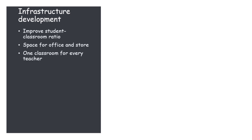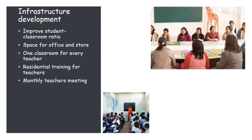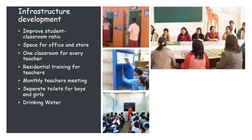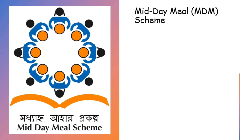Interventions under infrastructure development include: improving student-classroom ratio and providing space for office and store; specifying one classroom for every teacher; residential training for teachers; arranging monthly teacher meetings; separate toilets for boys and girls; drinking water facilities in schools; providing furniture to existing government upper primary schools; and providing maintenance grants for repairing school buildings.